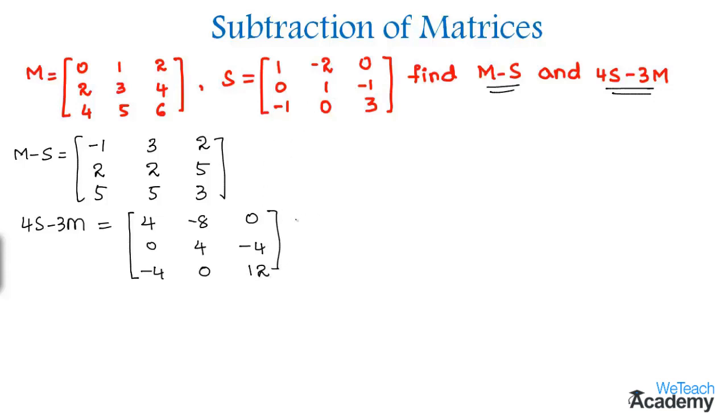So this is the matrix 4S and now we need to find the matrix 3M. So we need to multiply 3 with the matrix M. So by multiplying the matrix would become 3 into 0 which is 0, and then 3 into 1 is 3 and then 3 into 2 is 6. So this is the first row. And then the next row would be 6, 9 and 12. And then the elements in the last row would be 12, 15, 18.